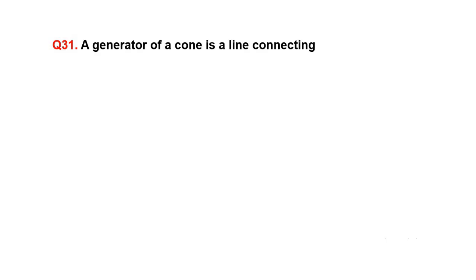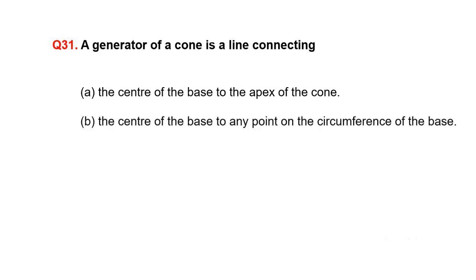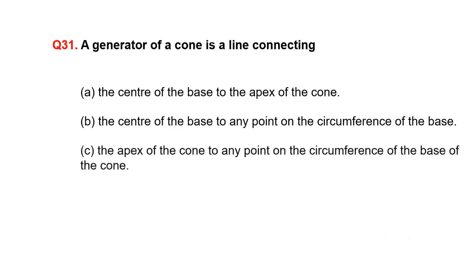A generator of a cone is a line connecting: A. The center of the base to the apex of the cone, B. The center of the base to any point on the circumference of the base, C. The apex of the cone to any point on the circumference of the base of the cone, D. None of the above.